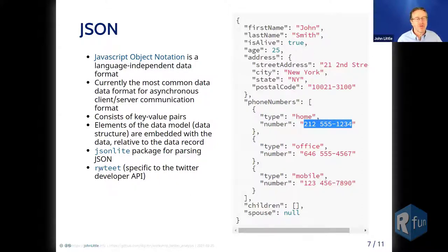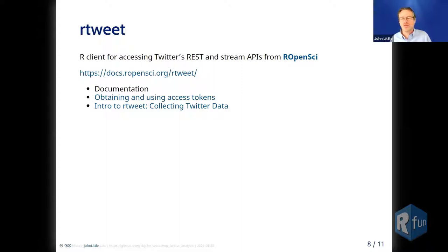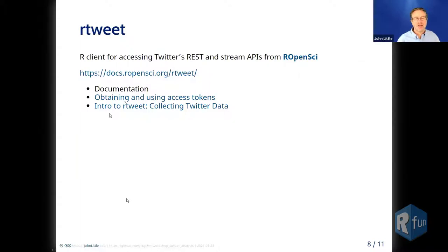Fortunately, we're talking about Twitter, so we're going to use the rtweet package, developed by rOpenSci. One of the things rtweet will do for us is turn the JSON data into a data frame, so we can largely ignore JSON parsing for today. You can go to the rtweet link, which gives you access to documentation on all the functions. Two particularly useful articles at that site are: 'Obtaining and using access tokens,' and 'An introduction to rtweet and collecting Twitter data' — we're basically going to run through that today.